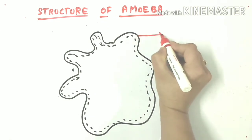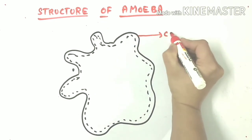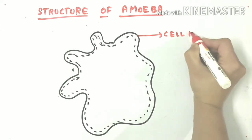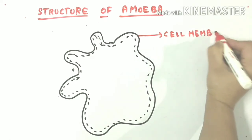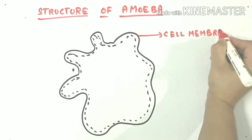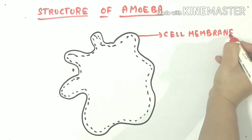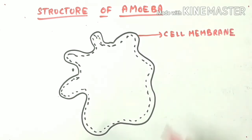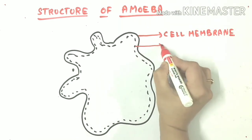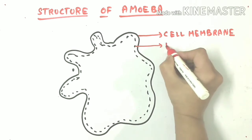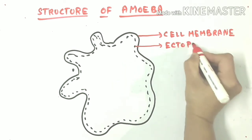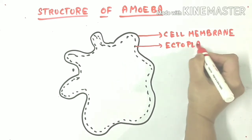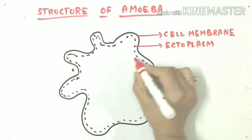This is the cell membrane — very important. It's a thin layer of protein and fats which allows only selective substances to get into the cell. This is the cell membrane of amoeba.